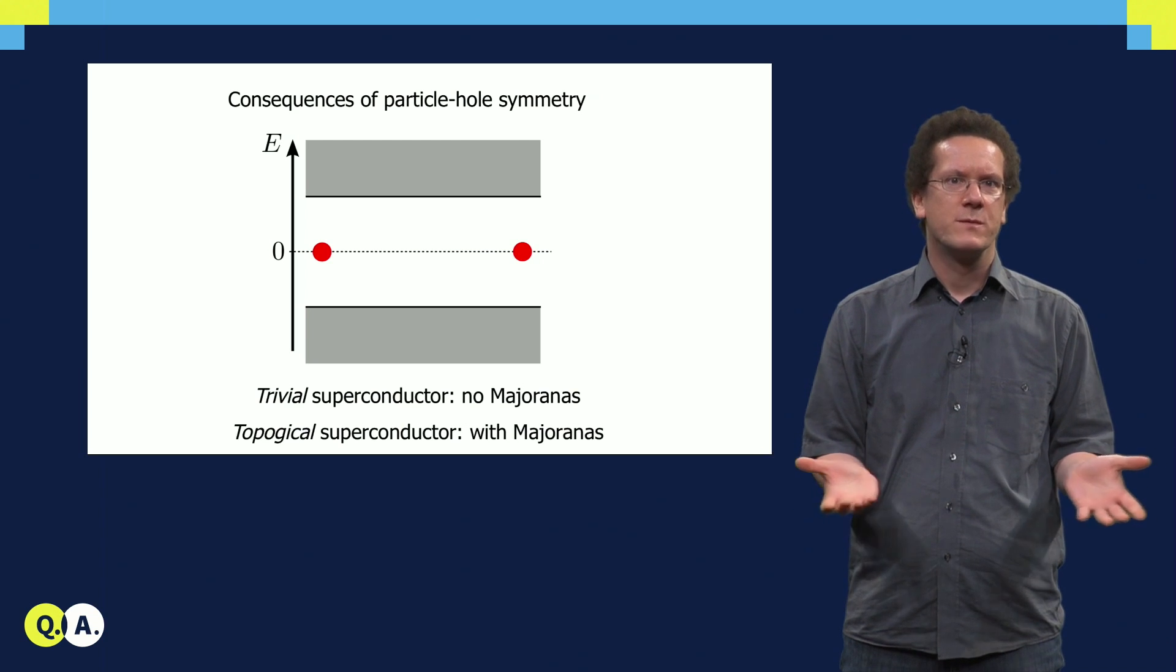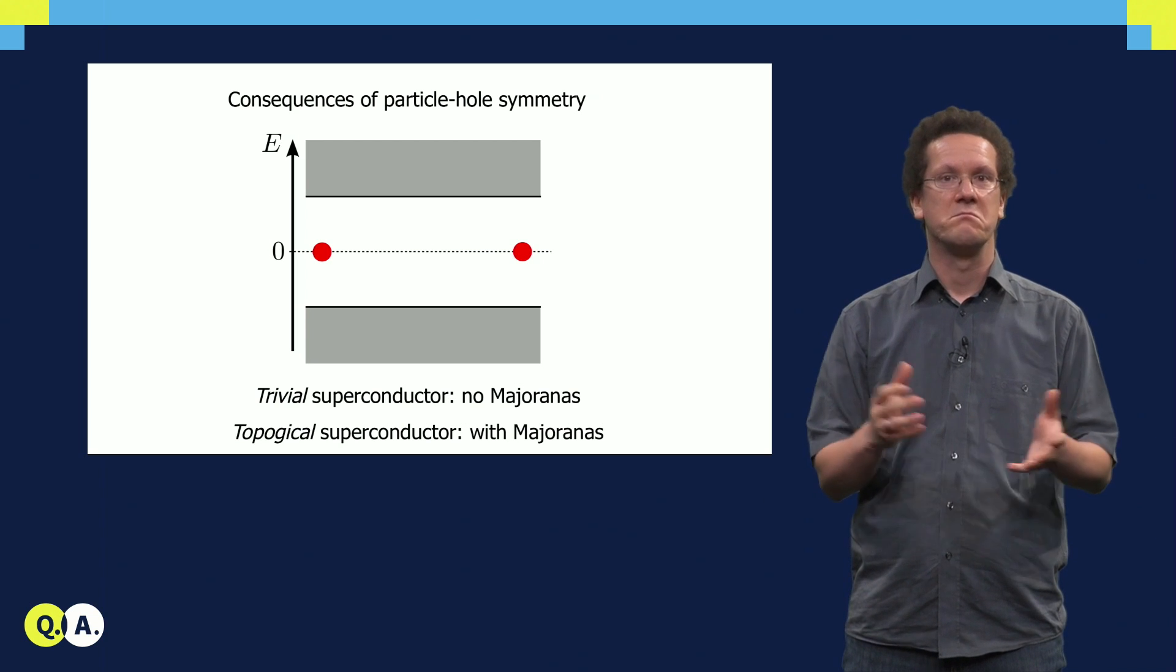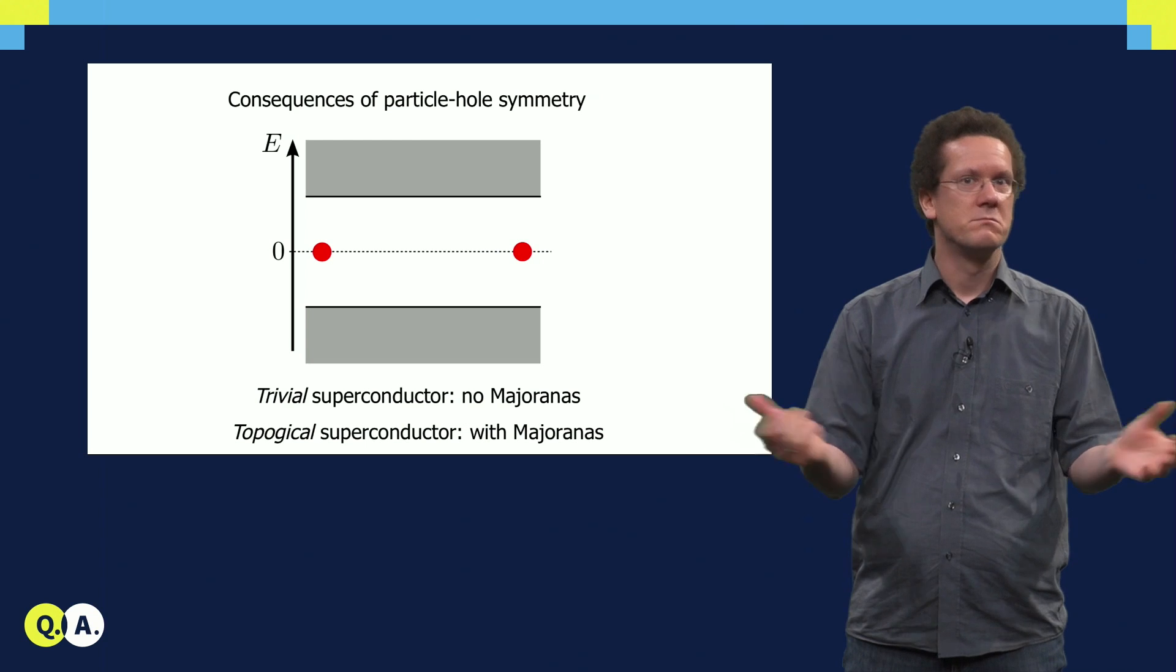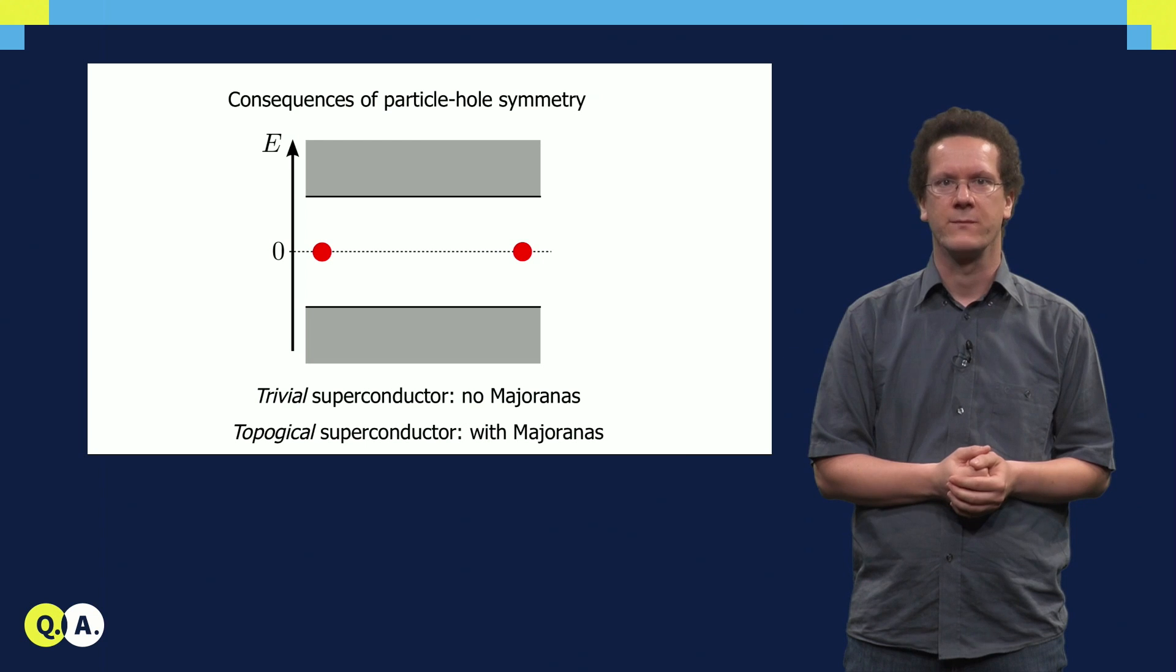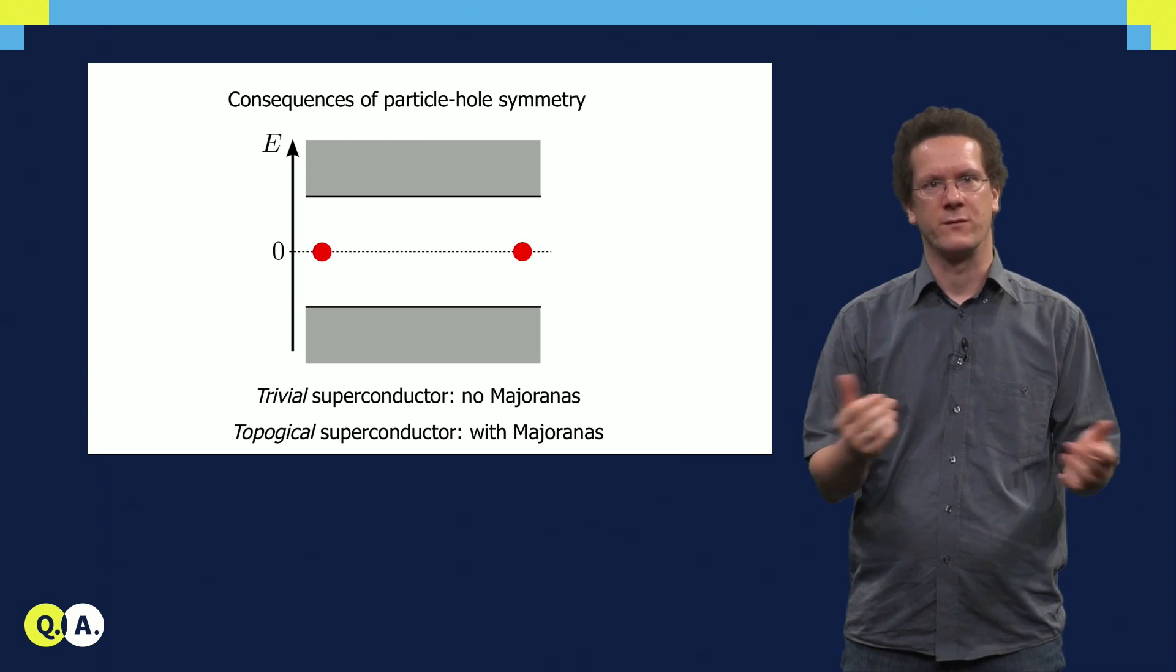We can thus distinguish two kinds of superconductors. Either there are Majorana bound states, and then they are protected, or there are no Majoranas at all. A superconductor that has Majoranas we call a topological superconductor. A superconductor without Majorana fermions we call a trivial superconductor.